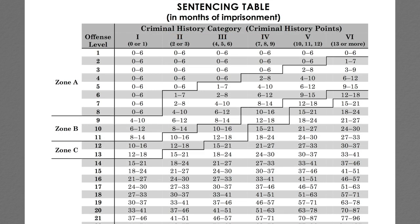Let's work through the sentencing table using a specific example — a fraud case. You find the specific guideline section 2B1.1, which gives you a base offense level of seven. Then you consider specific offense characteristics that may add to that number. In a fraud case, the more money involved, the higher the offense level. If the loss amount was $1 million, you add 14 points to the base offense level of seven, giving you a total offense level of 21.